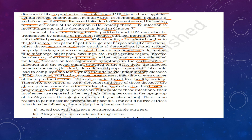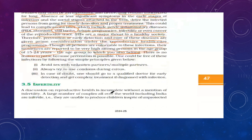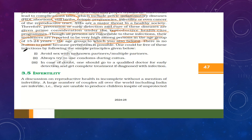STI incidences are reported very high among the 15 to 24 age group. There is no reason to panic because prevention is always better than cure. One should follow simple principles: avoid sex with unknown or multiple partners; always use condoms during intercourse; and in case of doubt, go to a qualified doctor for detection and complete treatment if diagnosed with an infection.